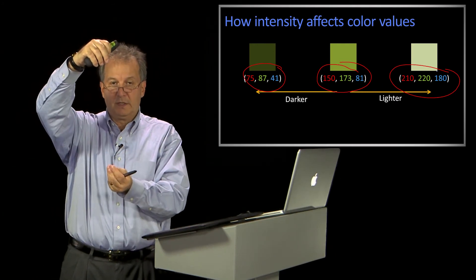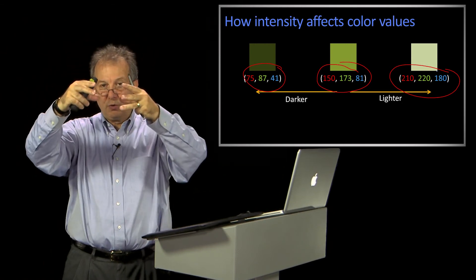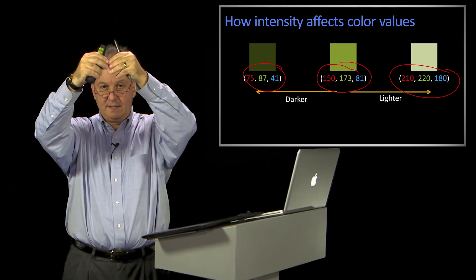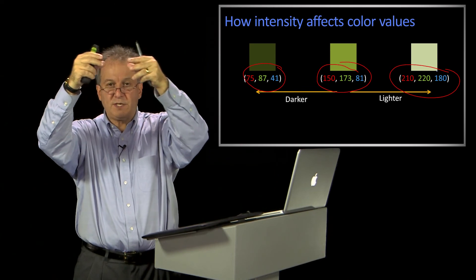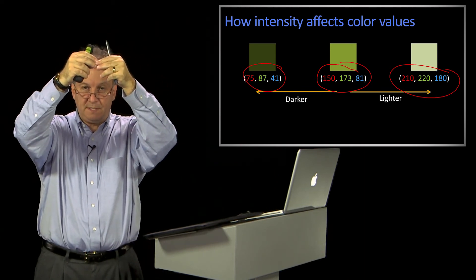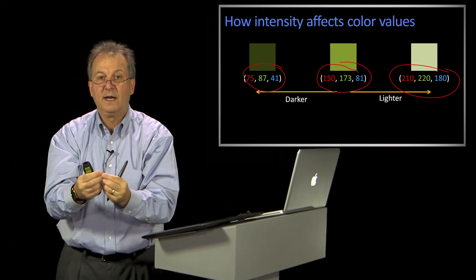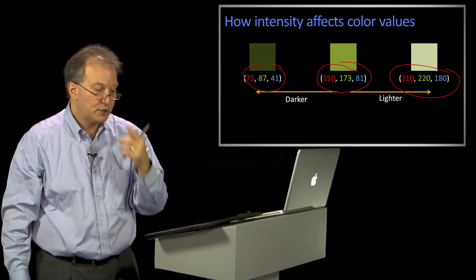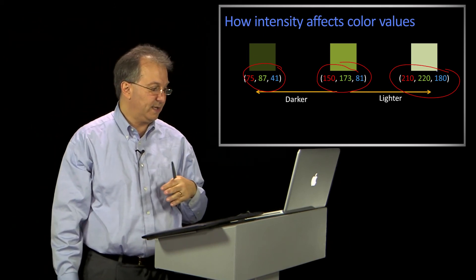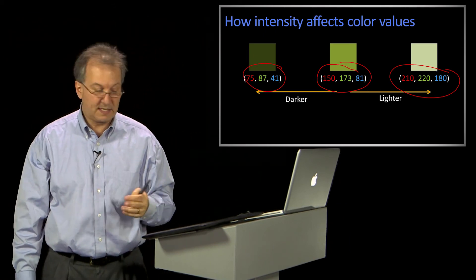Remember that cube, right? So as I get closer to white, I have no choice but to sort of get closer in RGB space. And as I get closer to black, I have no choice but to get closer. So to try to do this separation in RGB space is kind of difficult.